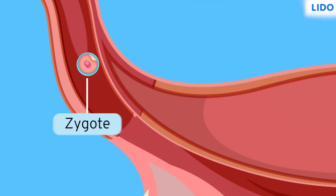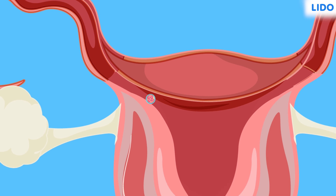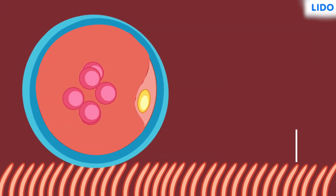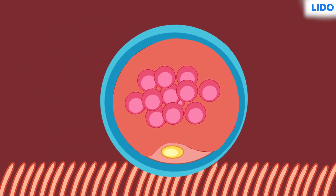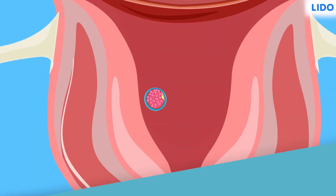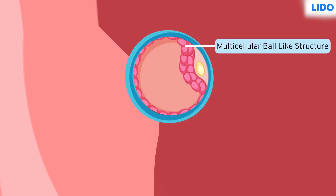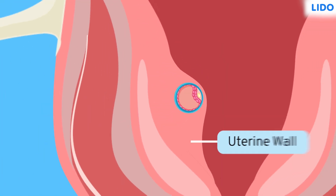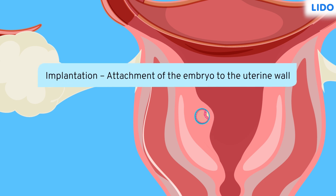Once fertilized, the zygote is formed and gets divided to form a multicellular ball-like structure which travels down the fallopian tube. Then, the hair-like structures of the wall of the oviduct push the multicellular zygote towards the uterus. Cells of the zygote continue to divide, forming a hollow multicellular ball-like structure which attaches itself firmly to the uterine wall and forms the embryo. The fastening of an embryo to the wall of the uterus is called implantation.